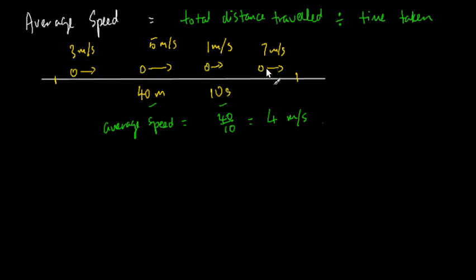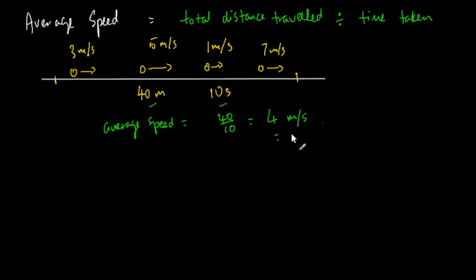Now let's come back and look at the various different speeds when the ball is along the way. When it's halfway through or some way through the motion, if this 4 meters per second is called the average speed, what do we call those other numbers? Almost all of them are different from 4 meters per second. In fact, it might be 4 meters per second at some point — like between 3 and 5, or between 5 and 1 — sometime over a very short time or just at some instant.